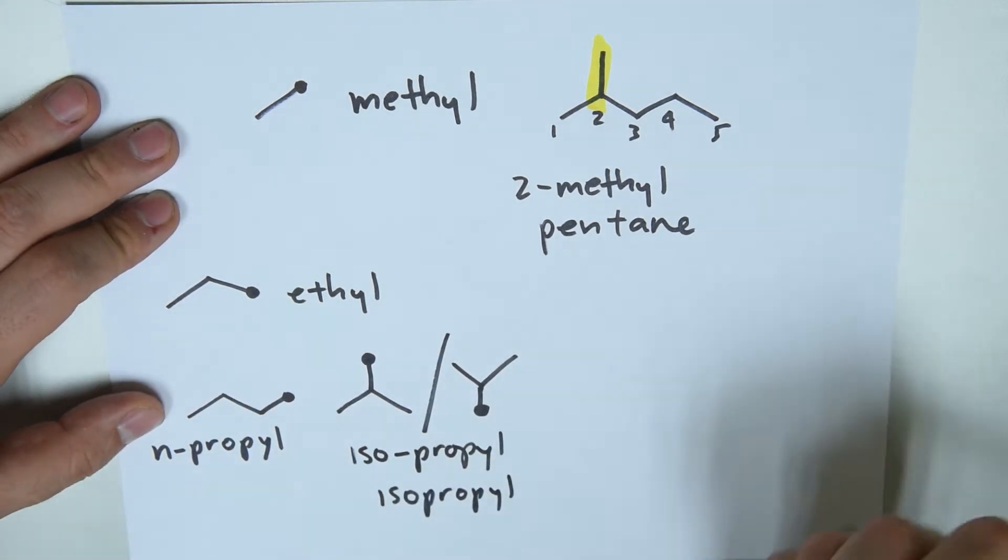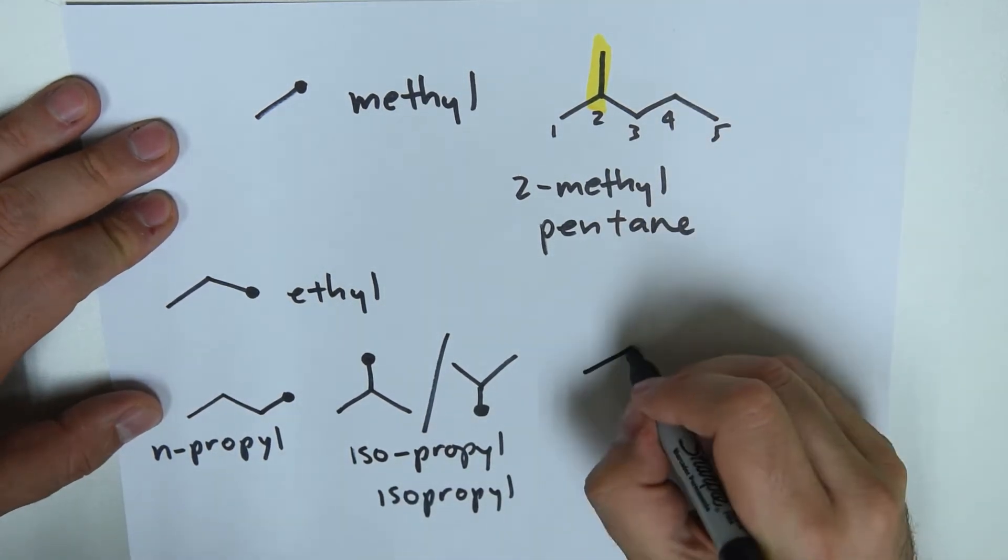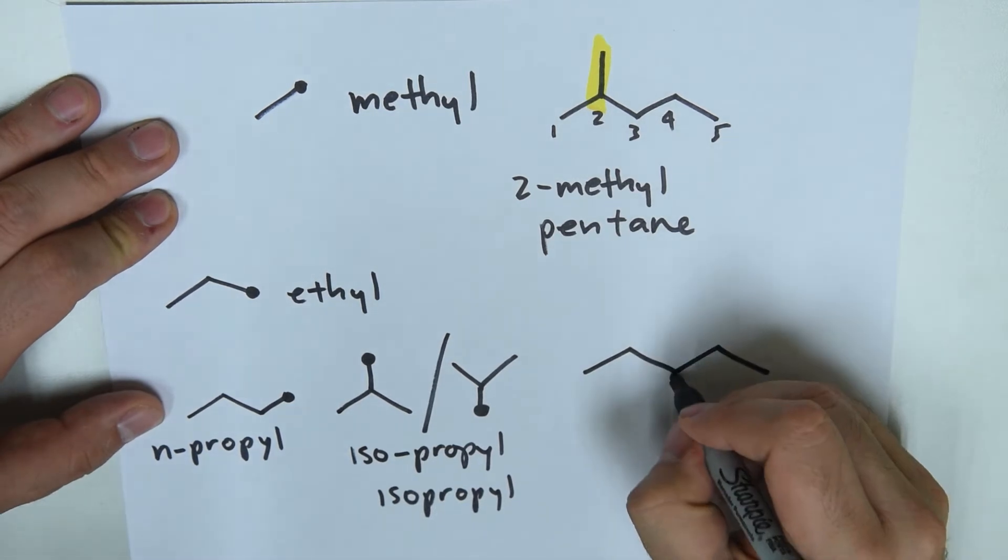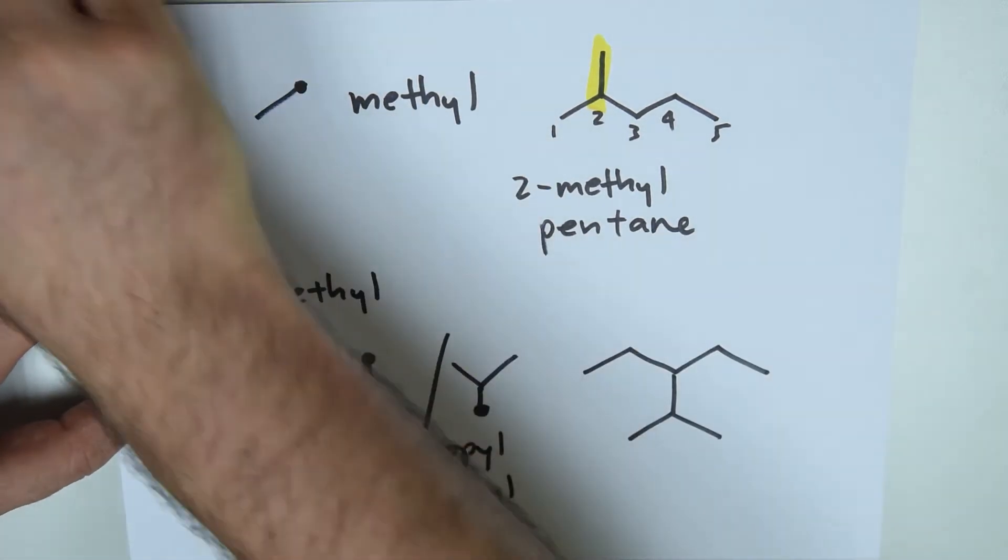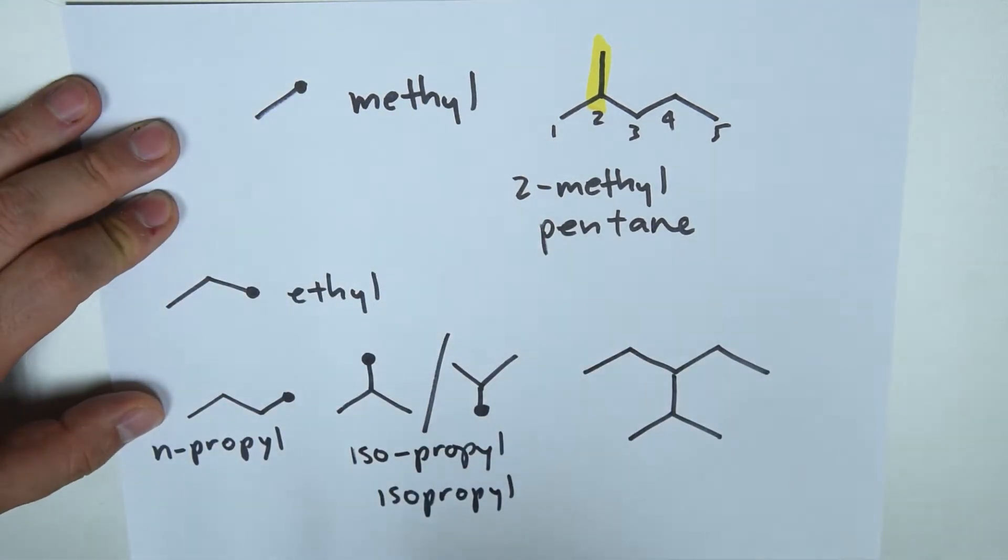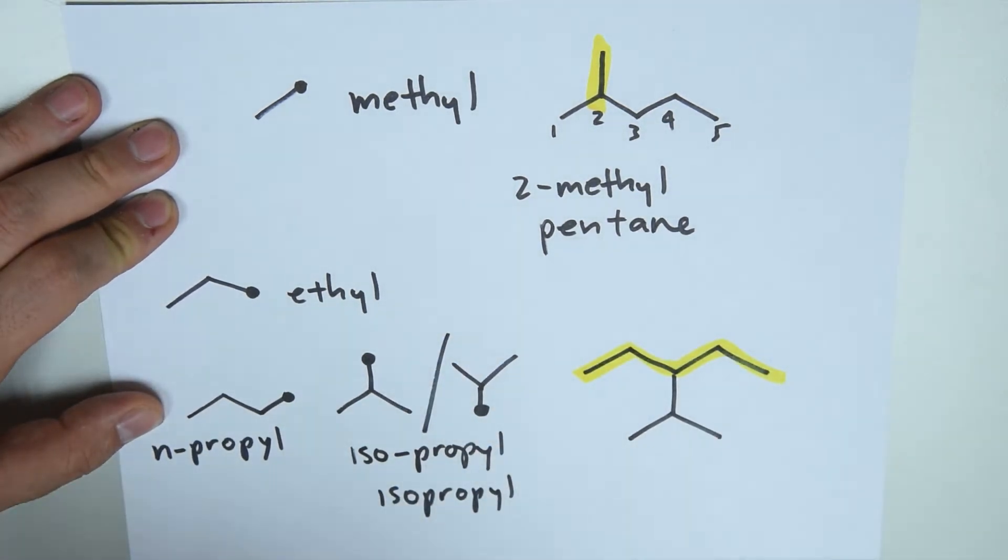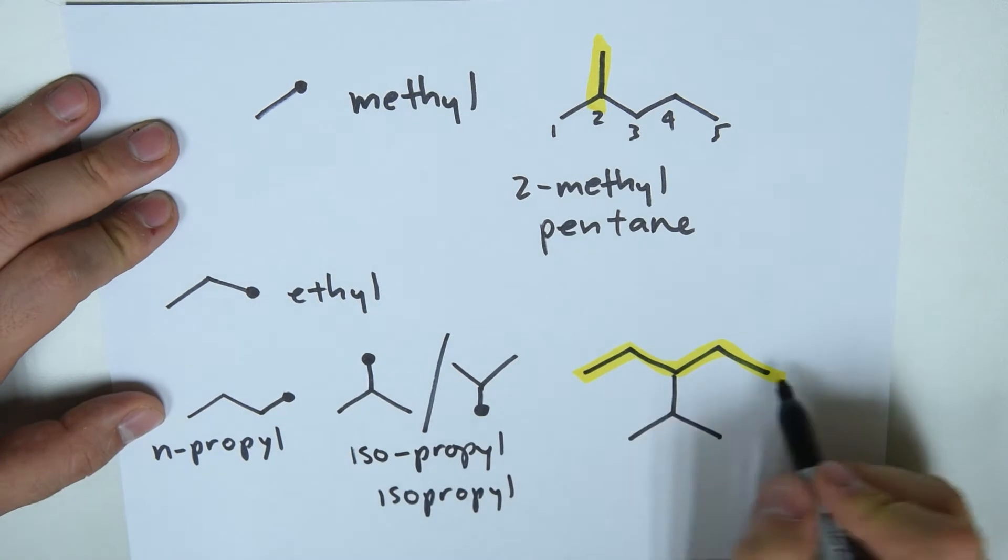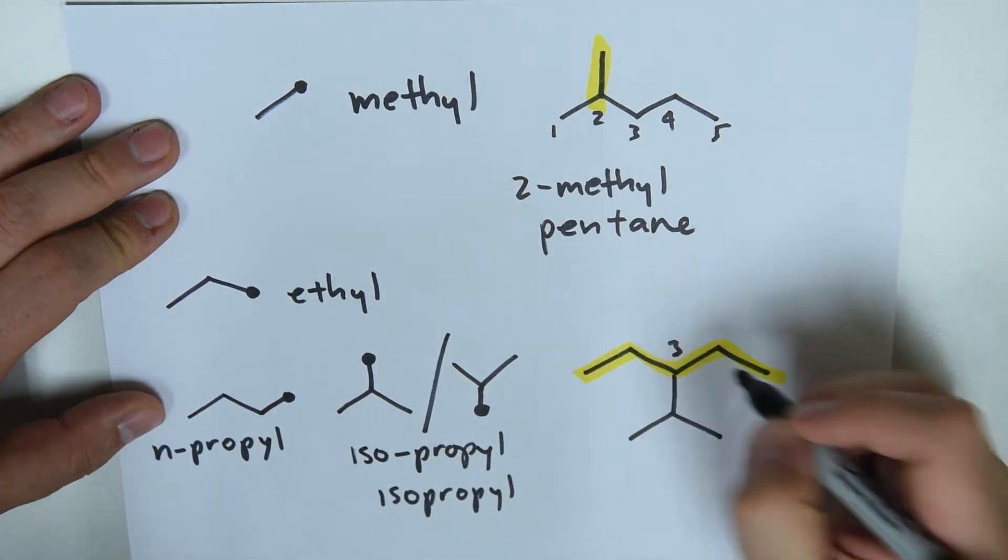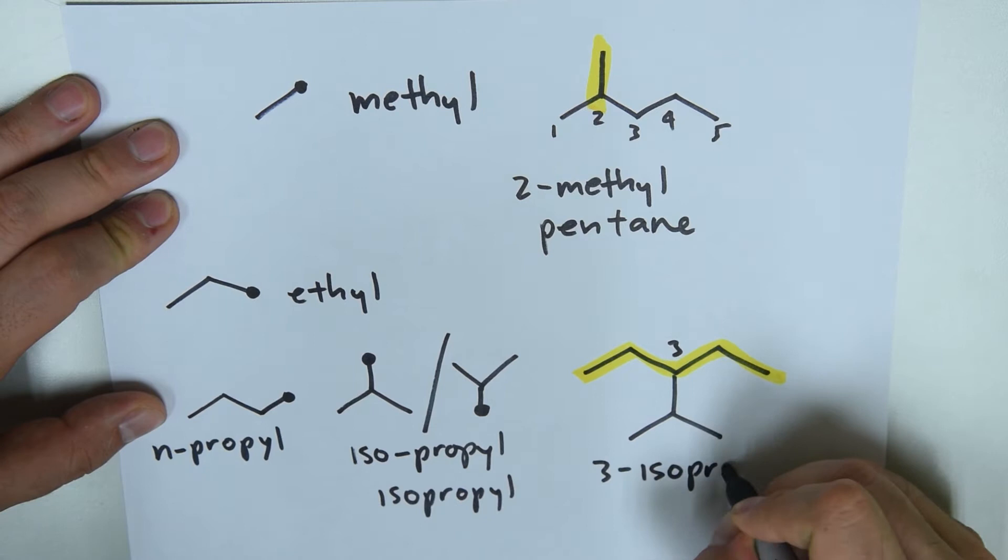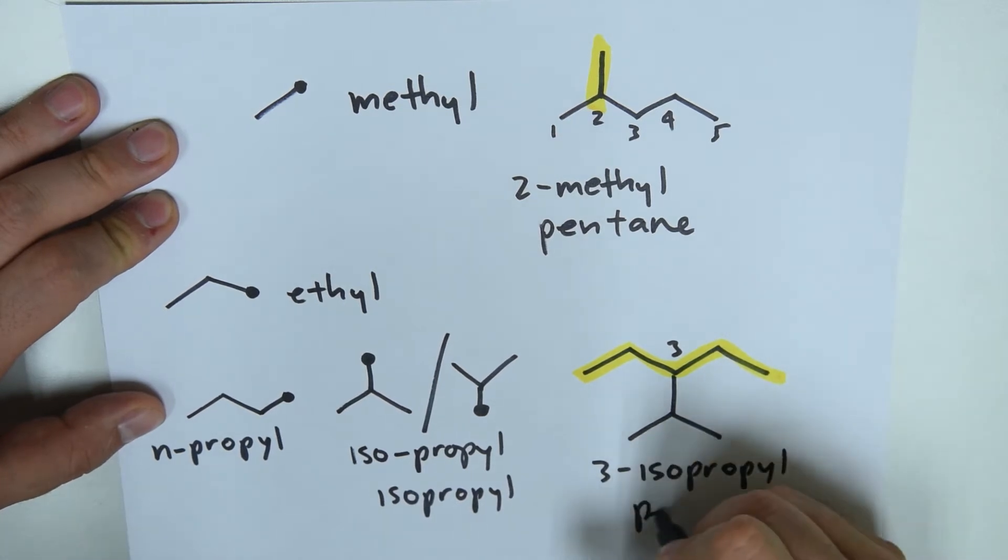So if we have a really big chain, let's take pentane again: one, two, three, four, five, pentane. In the middle we add this shape. Our longest chain is five, and we call this what? At number three, three-isopropyl pentane.